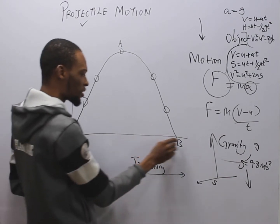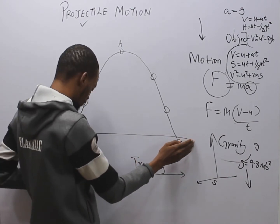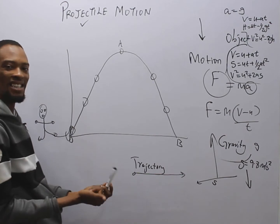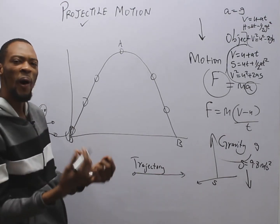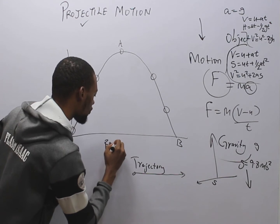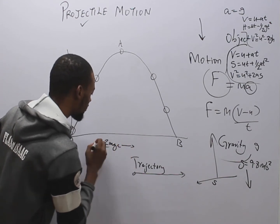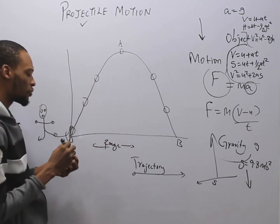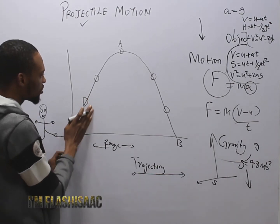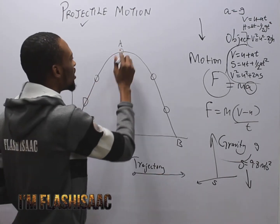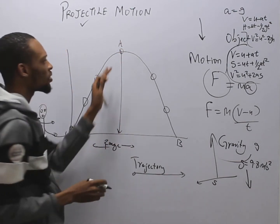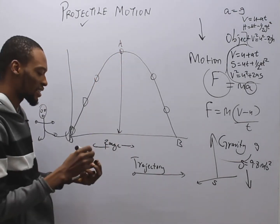The horizontal distance from where you kick the ball to where it lands is called the range of the projectile. As the ball moves along its path, the highest point it reaches is called the maximum height. So the horizontal distance is the range, and the highest point reached is the maximum height.